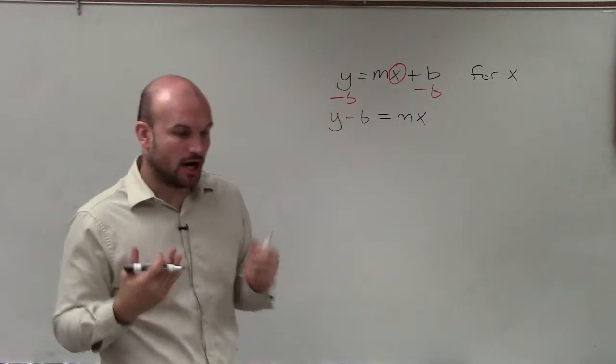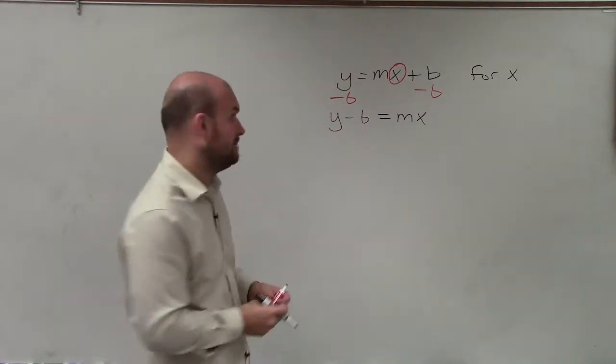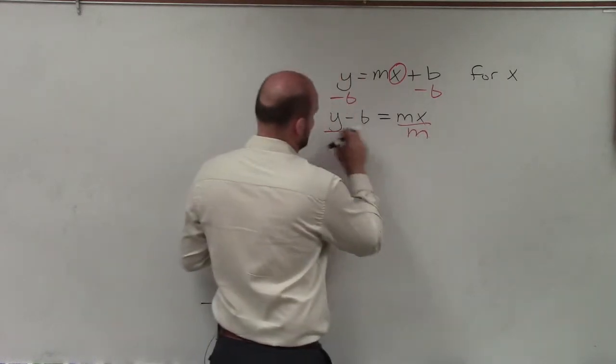Now, to solve for x, I need to undo multiplication by m. So therefore, I'm going to divide by m on both sides.